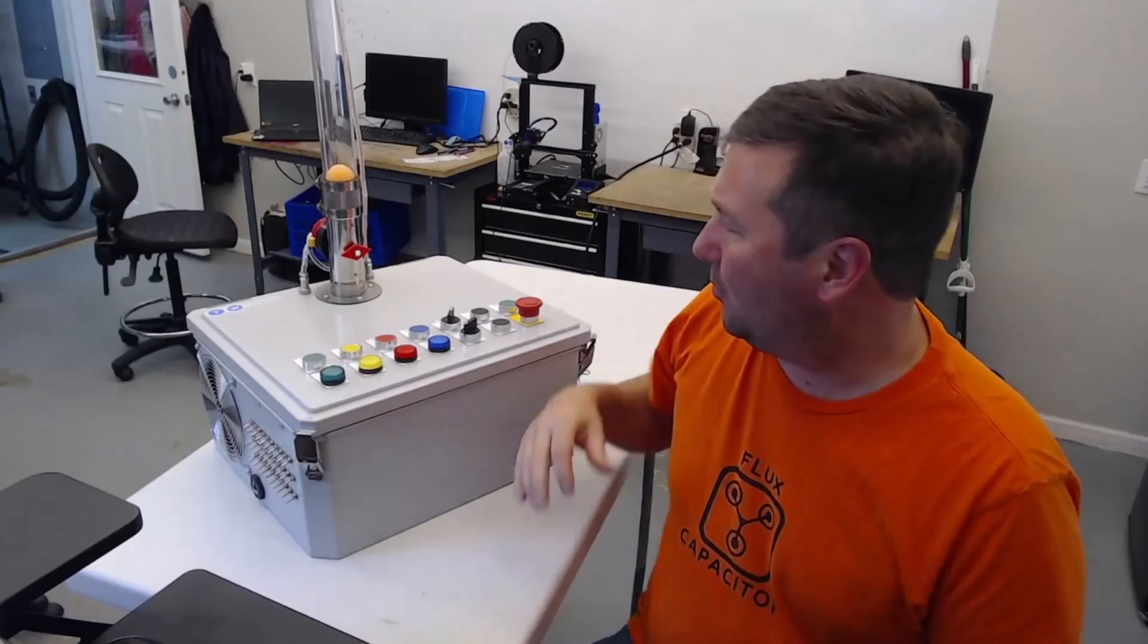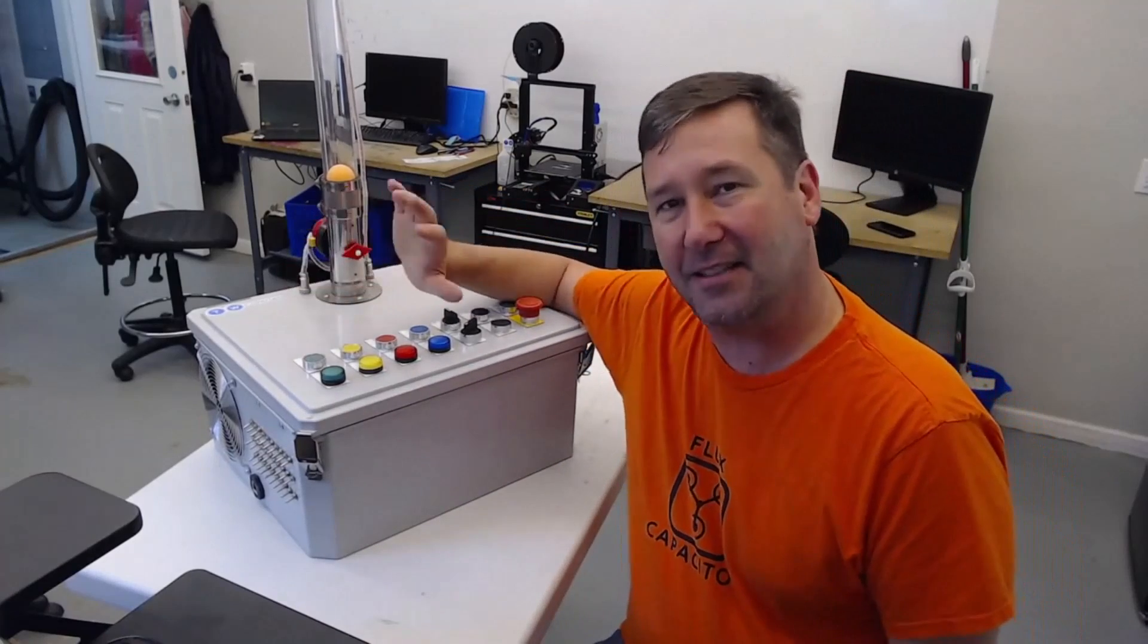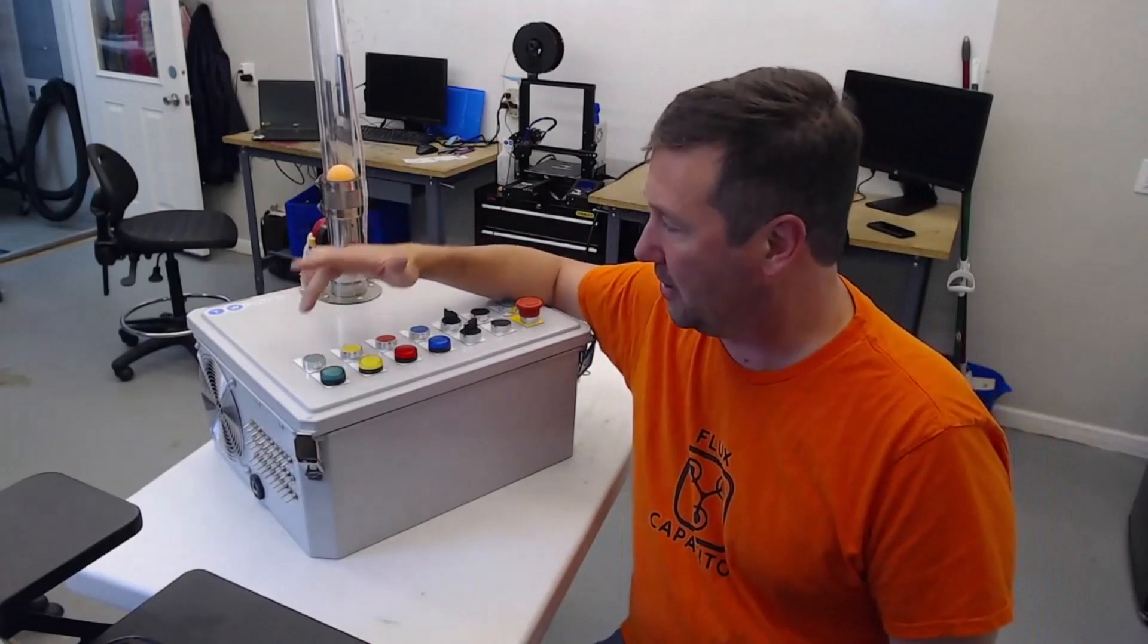First let's just talk really quickly about the difference between discrete and analog. When you think discrete, that is something that is on or off only, or a one or a zero.